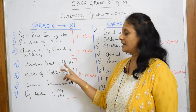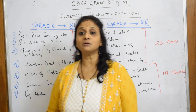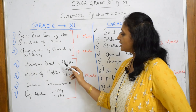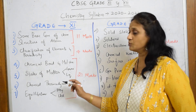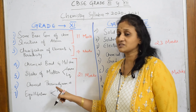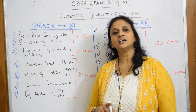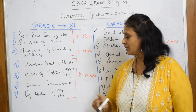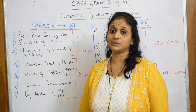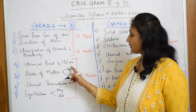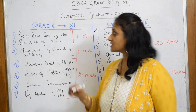Next comes 'Chemical Bonding and Molecular Structure.' The fifth chapter is 'States of Matter,' where you'll study gases and liquids. Then comes 'Chemical Thermodynamics' — an important chapter that most students tend to leave, but it is actually very easy. I've also done a video on this, please watch it. Next comes 'Equilibrium,' covering physical and chemical equilibrium. These four chapters together make up 21 marks.